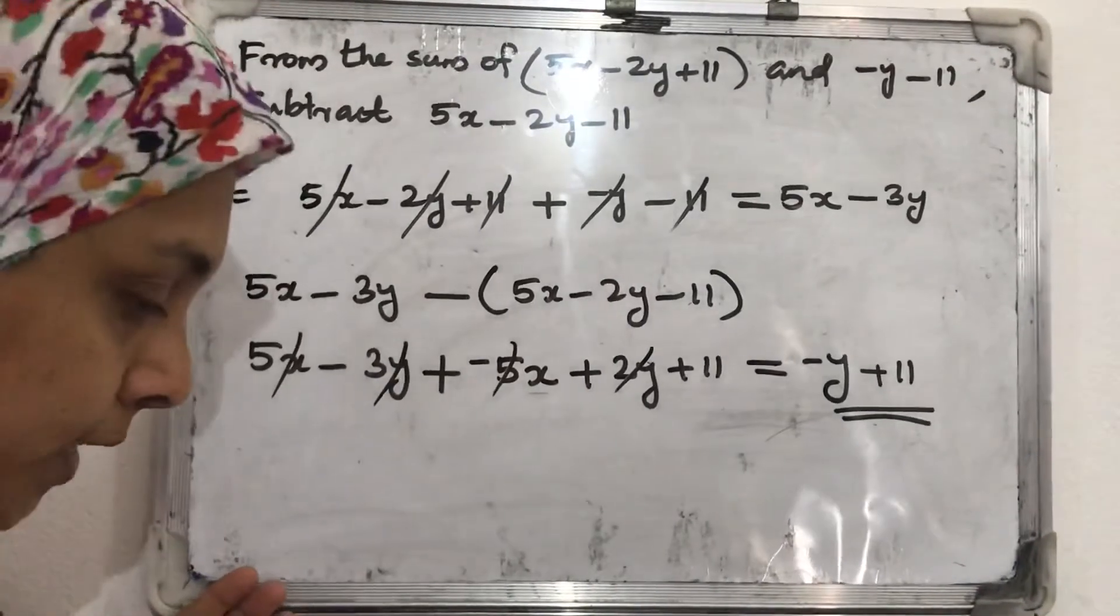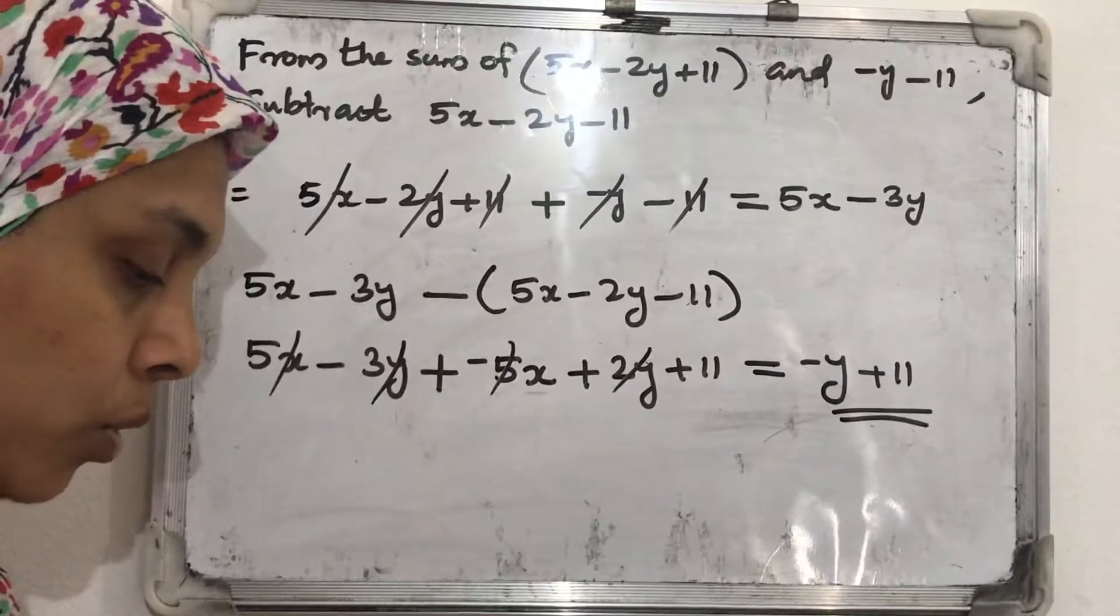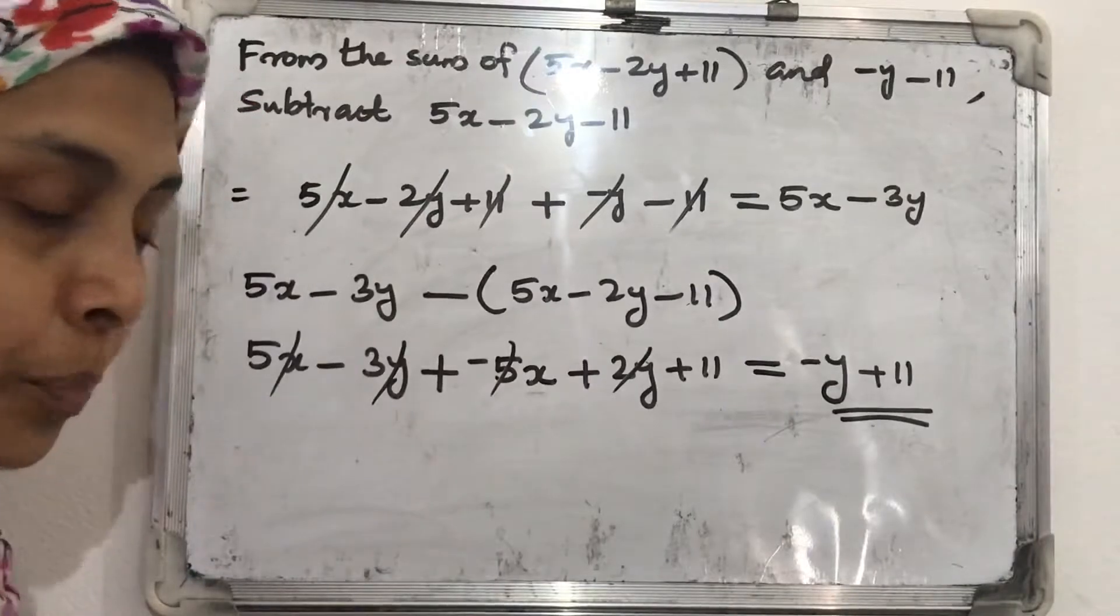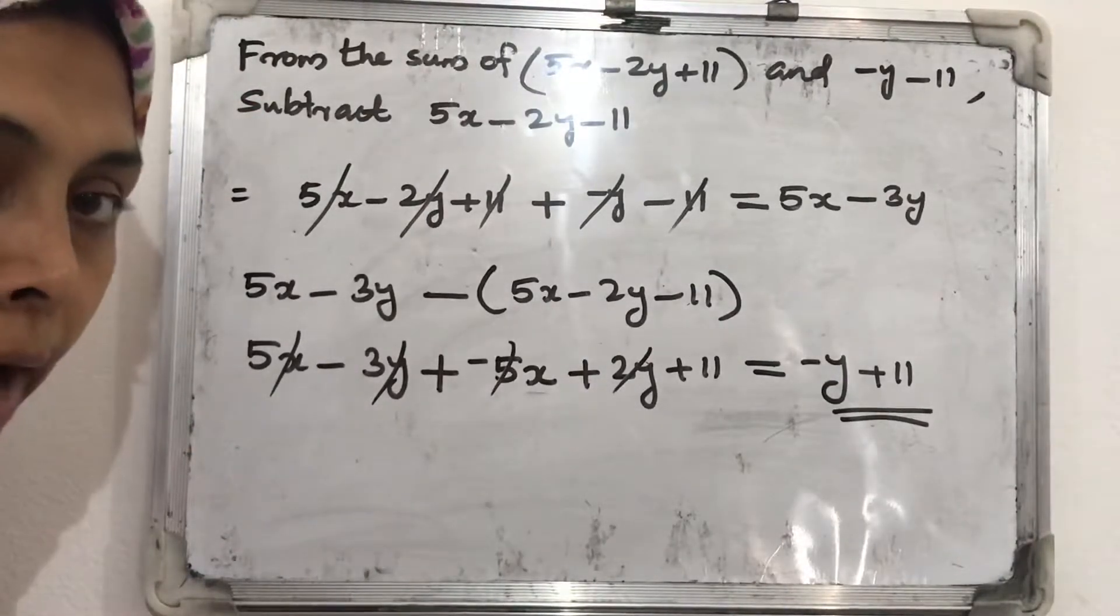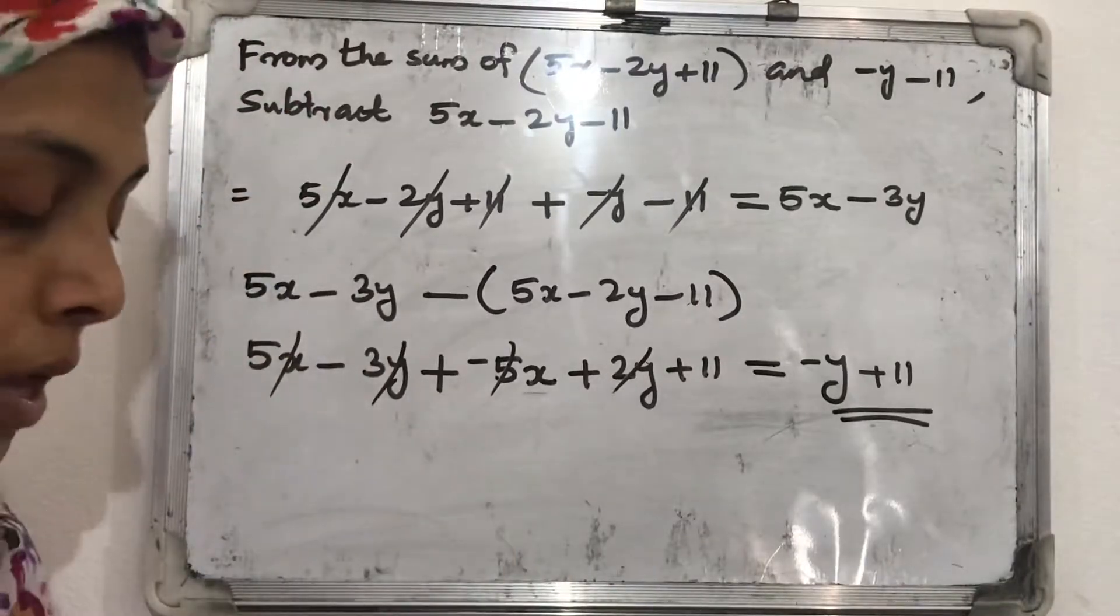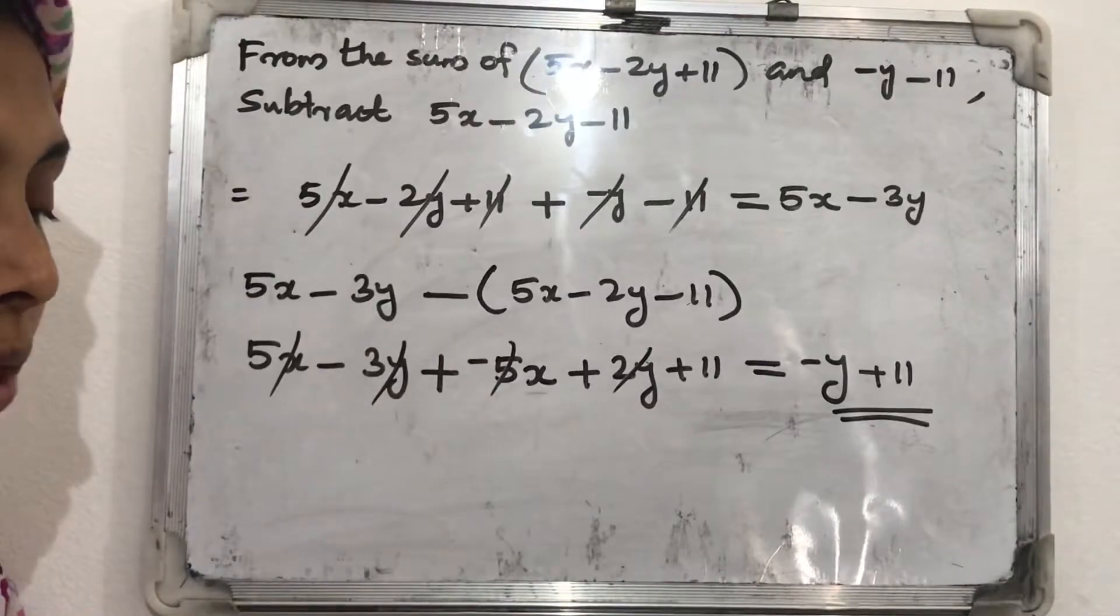This time so many questions are there. Another question is there. Dadu spends 3x plus 4y on a book and 7x minus 8y on a shirt. How much does he spend in all? So we want to add those two. That you can do alone. So all questions you can do alone. I will give the clue. Then question number 9, look. I will take the textbook and take that question.